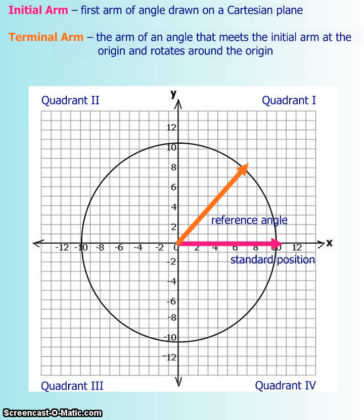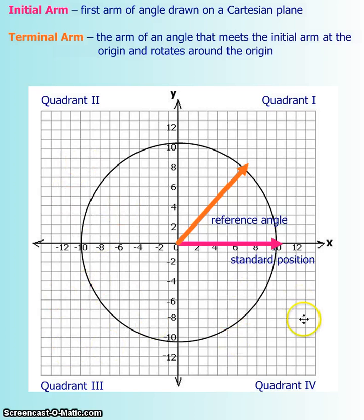Here's a Cartesian plane, and within the Cartesian plane you have four quadrants: quadrant one, quadrant two, number three, and number four.